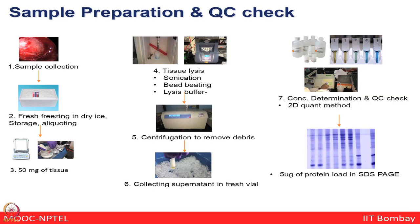Let us talk about the practical way of doing some of these things, starting with sample collection. Collecting biological biospecimens is not easy — it requires ethics approval to start a study from clinical samples, working under supervision of clinicians and pathologists to obtain the right sample types, which must immediately be flash-frozen and stored in the right conditions. Then you immediately do protein extraction to take the proteome analysis forward, requiring a minimum of around 30 to 50 milligrams of tissue for lysis by sonication, bead-beating, or lysis buffer addition, then centrifugation to remove debris and collect the supernatant for QC checks and protein quantification.